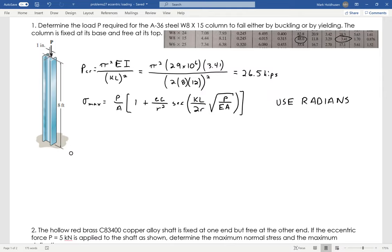So I'm going to get 26,500 for P. The area, that is given right here - that's the area of the wide flange beam that I've got. So that's 4.44. Times 1 plus the eccentricity, which is 1 inch.